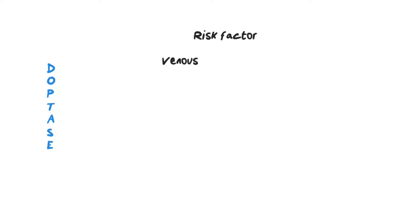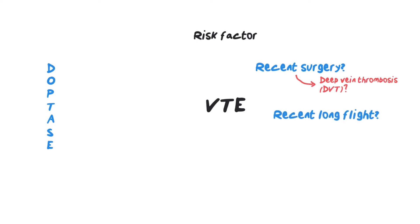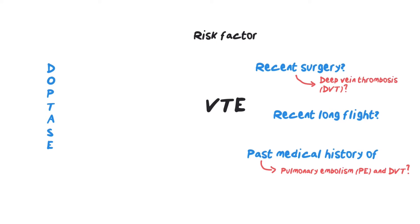Now ask about risk factors for venous thromboembolic events — VTE. Ask about any recent surgery, as some patients present with swollen leg post-operatively and you need to think about DVT. Similarly, a patient who has recently taken a long flight is at risk for VTE. Ask about any past history of VTE, family history of clotting, and any history of malignancy. It's helpful to have an idea of the Wells score — if you don't know it, look it up or I can make a video about it.